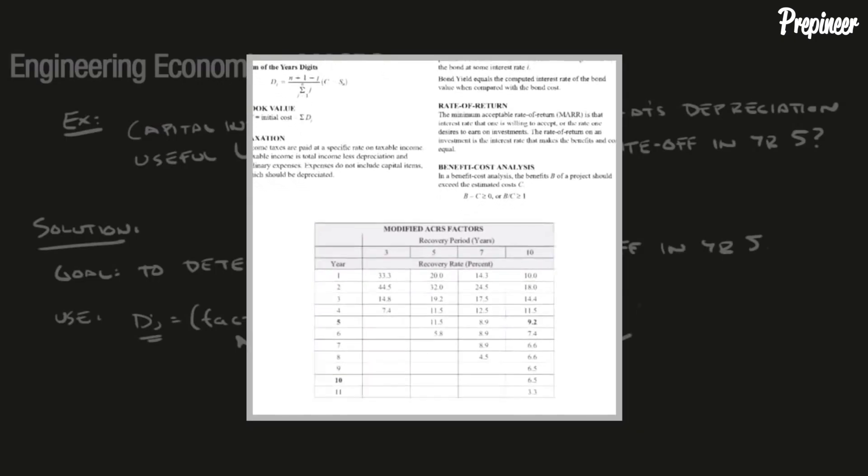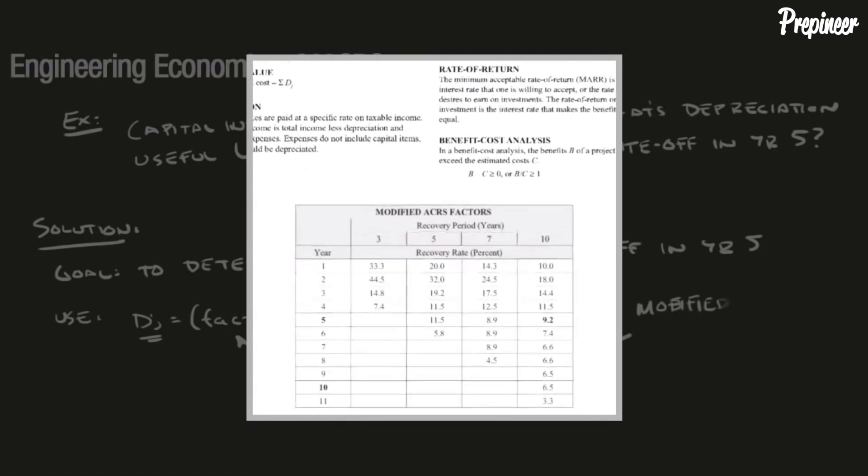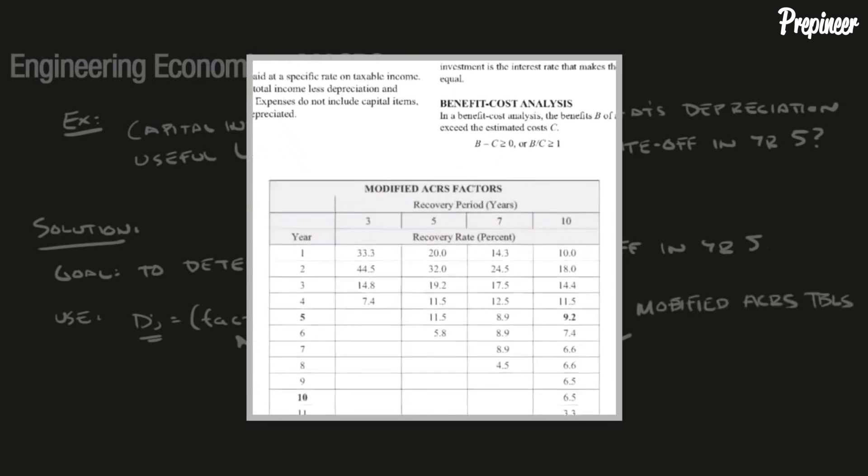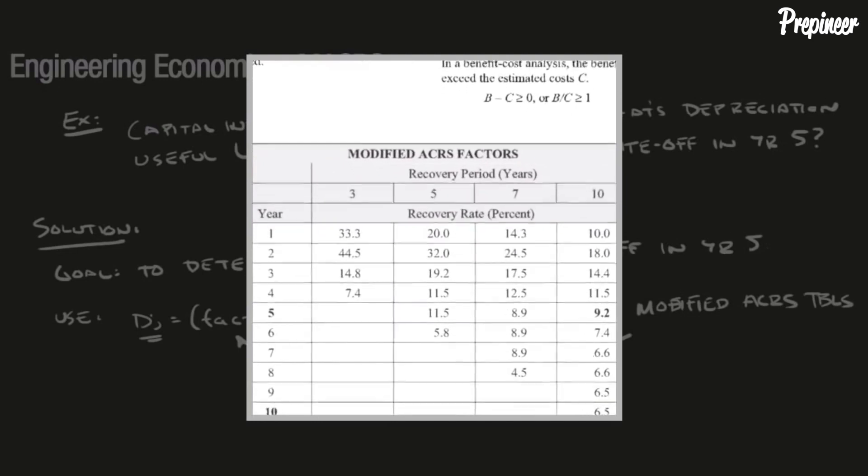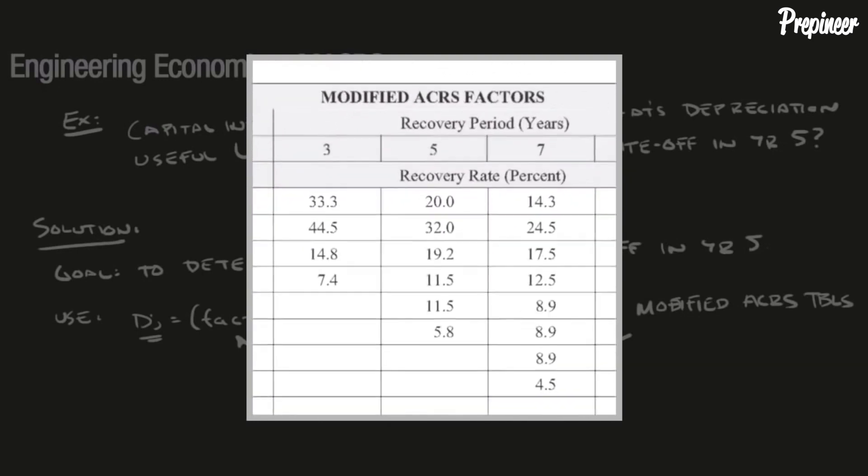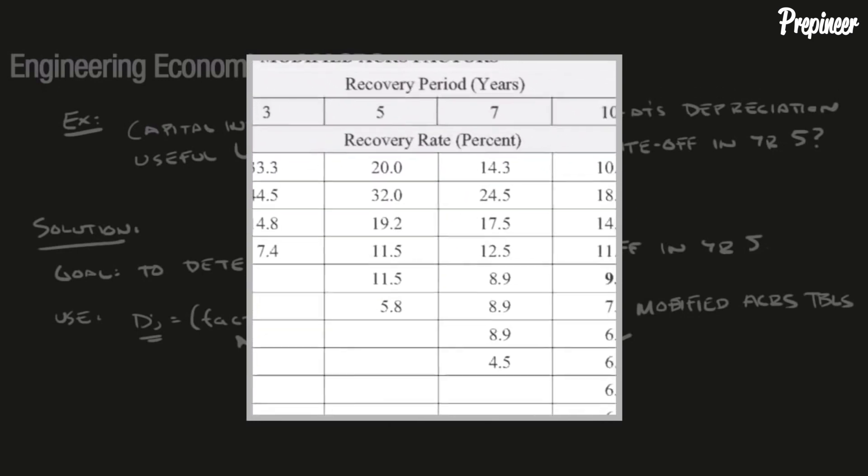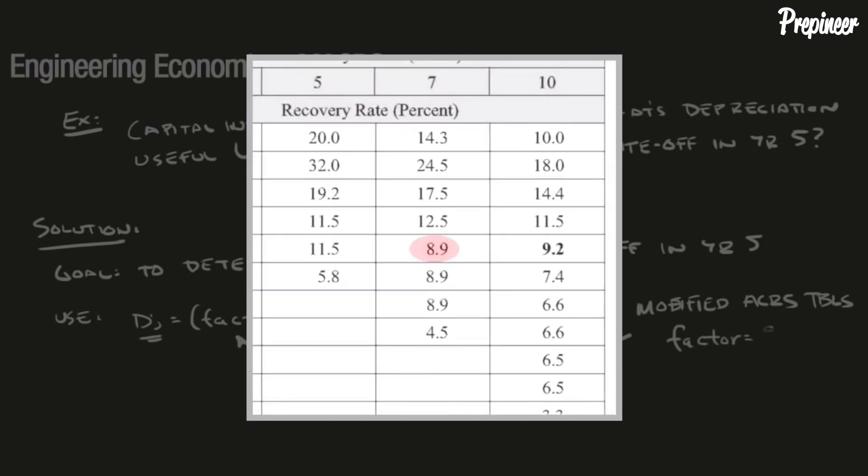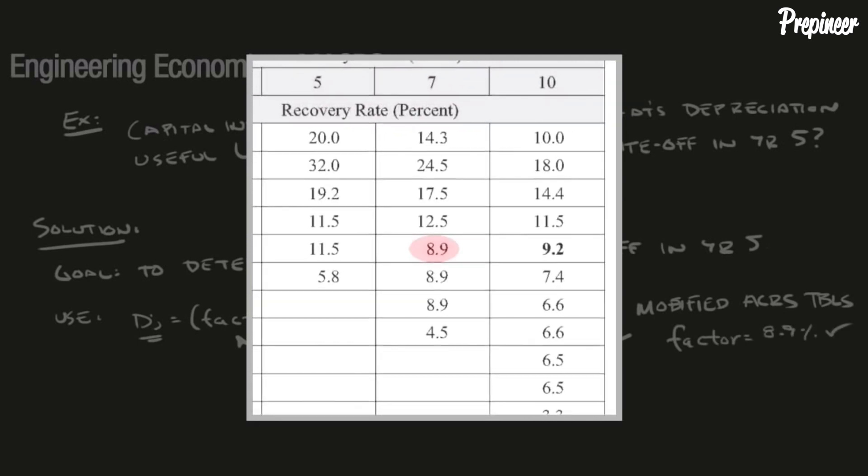The useful lifespan is seven years, so referencing the modified ACRS table found on page 115 of the NCEES Supplied Reference Handbook, we find that the factor equals 8.9%. It is important to note that these factors are given as percentages and must be converted to decimal when determining the depreciation.